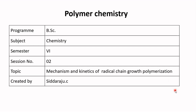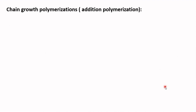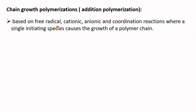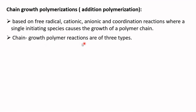In this session I am going to discuss the mechanism and kinetics of radical chain growth polymerization. Chain growth polymerization is also called addition polymerization. It is based on free radical, cationic, anionic, and coordination reactions, where a single initiating species causes the growth of a polymer chain.